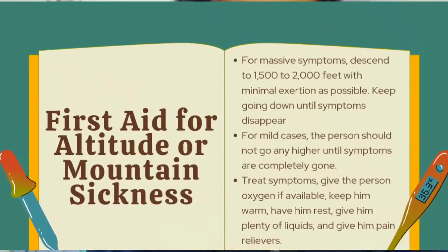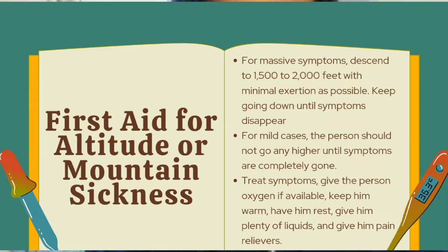First aid for these illnesses: if symptoms are severe, immediately descend 1,500 to 2,000 feet with minimal exertion as possible. Keep descending until symptoms go away. If symptoms are mild, the person should not go any higher until symptoms are completely gone. Additionally, give the person oxygen if available, keep them warm, give them rest, give them plenty of liquids, and give pain relievers.